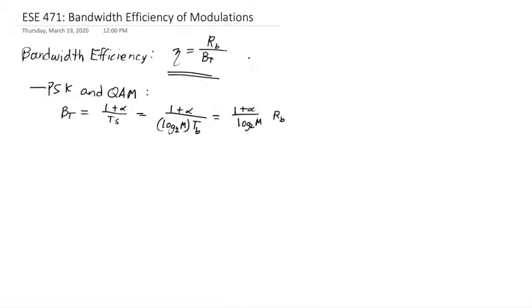And now I can write the bandwidth efficiency as Rb divided by this Bt, which is 1 plus alpha divided by log base 2 of m times Rb. The Rb's cancel, and we're left with log base 2 of m divided by 1 plus alpha.